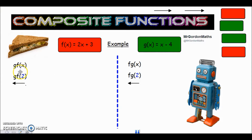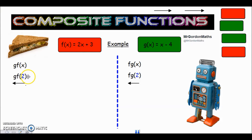The first question says work out gf of x when you've got gf of 2. It's saying that x has to be replaced with the number 2. From the first videos, remember that wherever you see an x in your function you put the number 2. We've got to go through both the f and the g function. Because the f is the closest to the number 2, that's the function we go through first, and then we go through the g function.